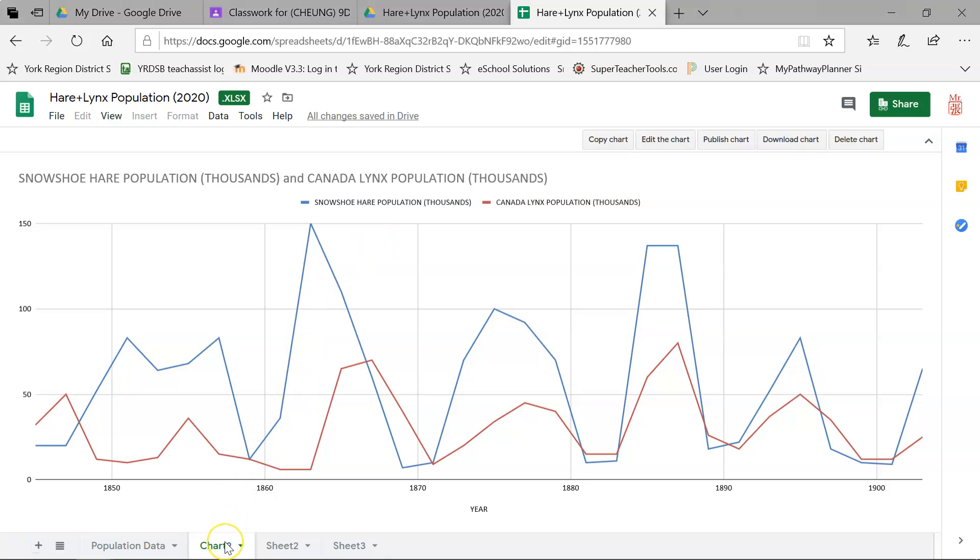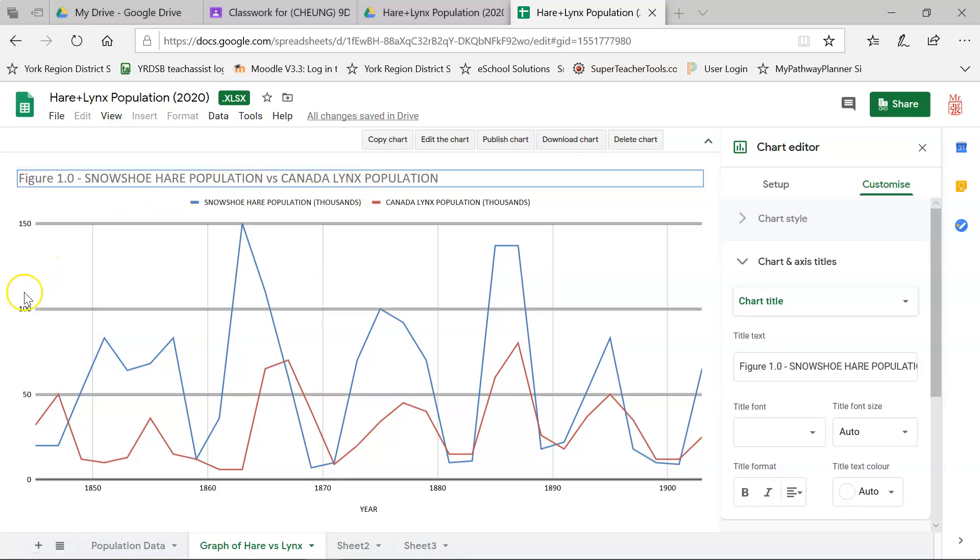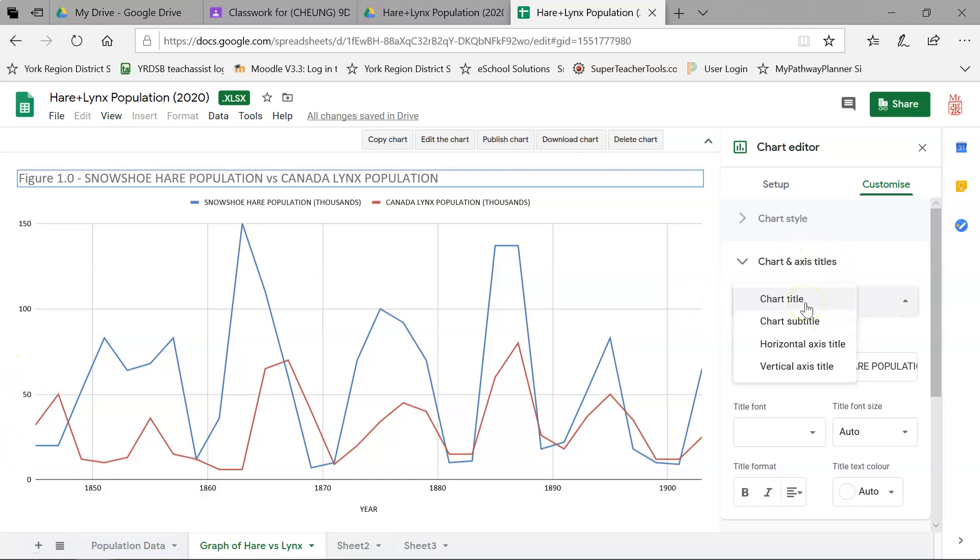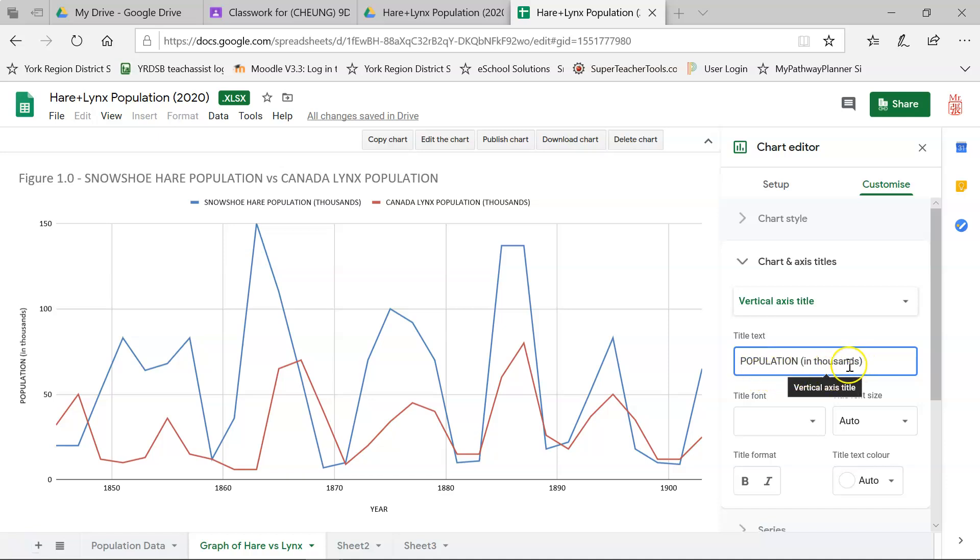Let's clean things up. I'm going to first rename this to Graph of the Hare versus the Lynx. Then I'm going to change the title to Figure 1.0 Snowshoe Hare Population versus the Canada Lynx Population. You notice the y-axis is not properly labeled. I'm going to click on the Chart Title Axis Settings and choose the Vertical Axis Title. That allows me to type it in—I will call it Population in Thousands, and you'll see it appear on the left-hand side.